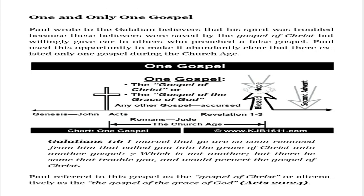One and only one gospel: Paul wrote to the Galatian believers that his spirit was troubled because these believers were saved by the gospel of Christ but willingly gave ear to others who preached a false gospel. Paul used this opportunity to make it abundantly clear that there existed only one gospel during the church age. Galatians 1:6-7: 'I marvel that ye are so soon removed from him that called you into the grace of Christ unto another gospel, which is not another, but there be some that trouble you, and would pervert the gospel of Christ.' Paul referred to this gospel as the gospel of Christ, or alternatively as the gospel of the grace of God (Acts 20:24).